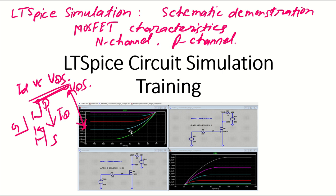For P-channel, we have current increasing in the negative direction. For N-channel, we have current increasing in the positive direction. As VDS changes, after a certain point the current gets saturated — around 5 volts or so. You can see what is the cutoff characteristic and what is the saturation region.